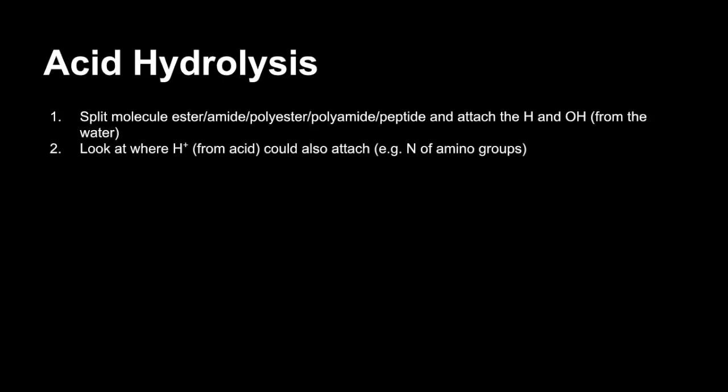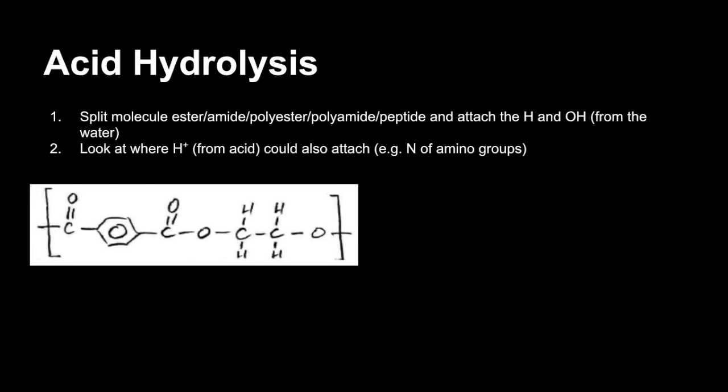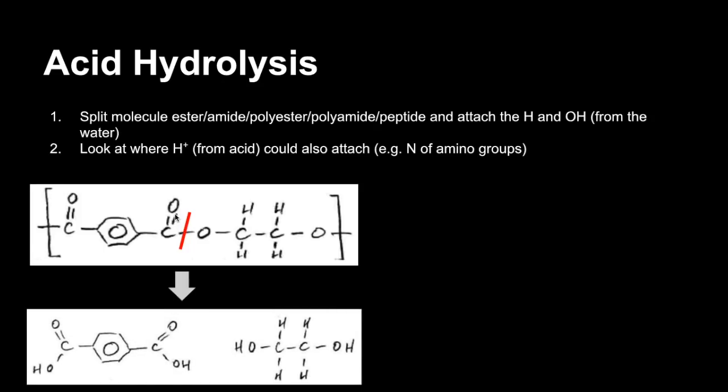We'll move on to hydrolysis. That's just a chemical breakdown by reaction with water. The first thing we need to do is split the molecule that's being broken down and attach an H and an OH from the water molecule. The second thing, and this is often where students lose a mark, you need to look at where the H+ from the acid could also attach. If you've got any nitrogen from amino groups, then that can accept a proton from the acid. Let's say, for example, we're going to break this by acid hydrolysis. The bond that gets broken is this ester bond. We break that and we put the OH on this side where the C=O is and we put the H on this side. Then ask ourselves, can H+ go anywhere on there? And the answer is no.